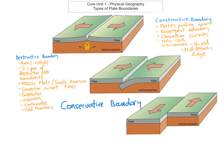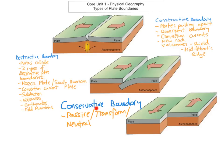The last plate boundary we're going to look at is conservative. Conservative is sometimes known as a passive plate boundary, or sometimes as transform, or sometimes as neutral. Just be careful in case you see those terms on the exam — they're just alternative words for conservative. The conservative plate boundary is when plates slide past each other and cause a lot of friction.